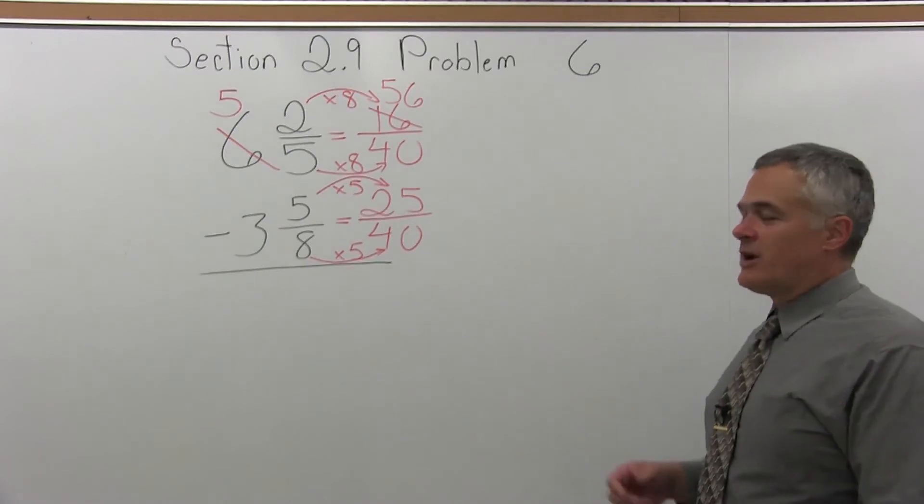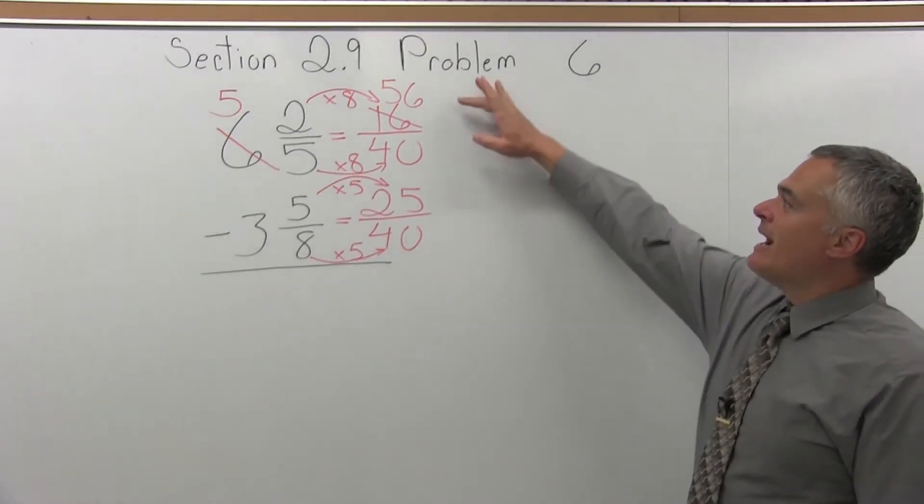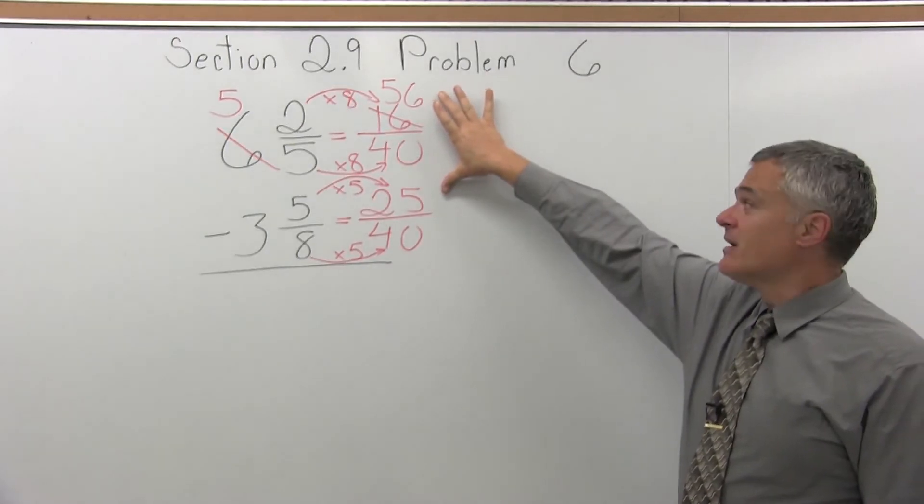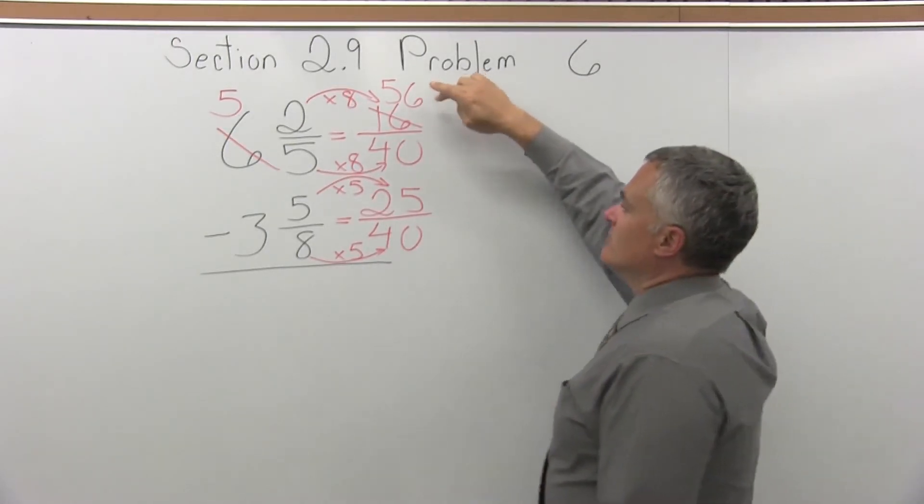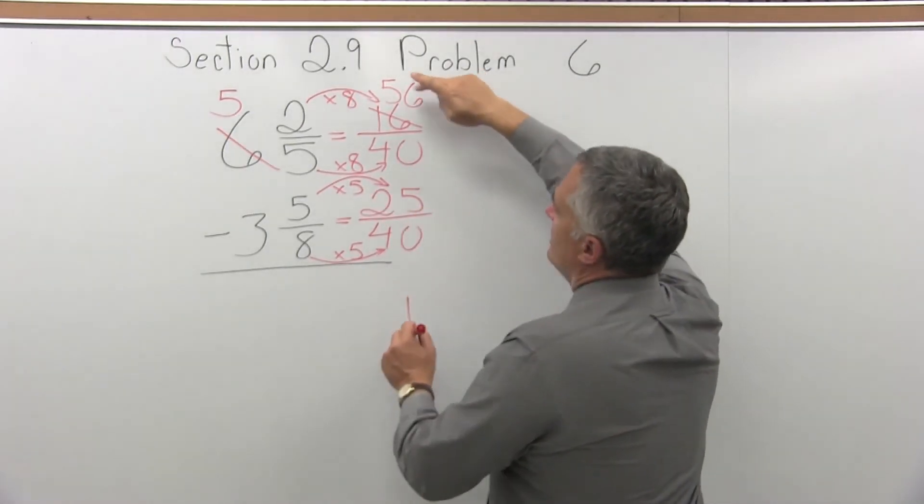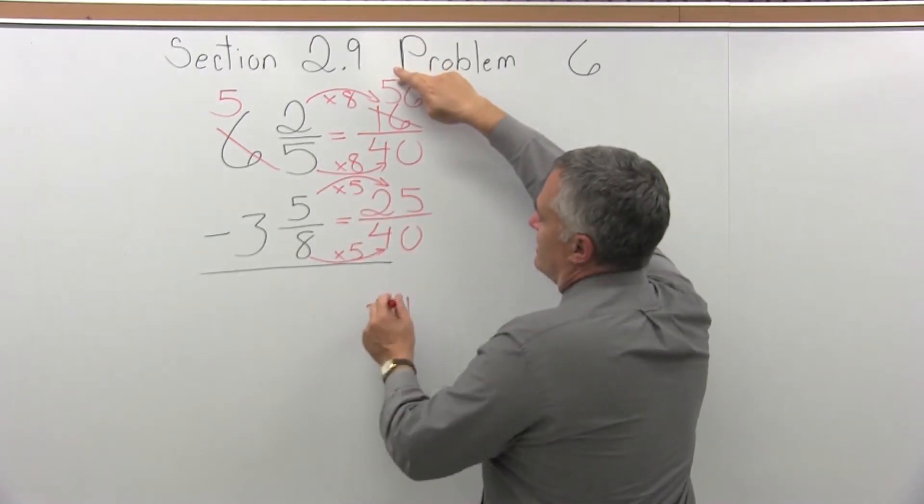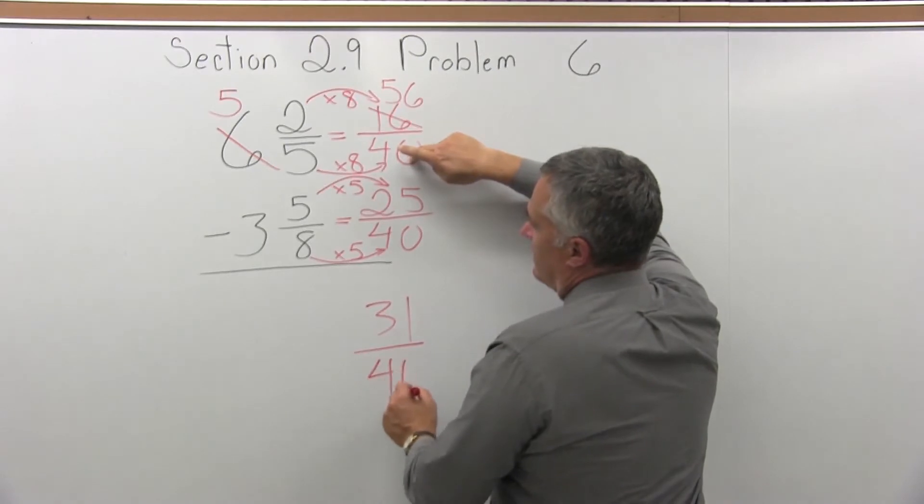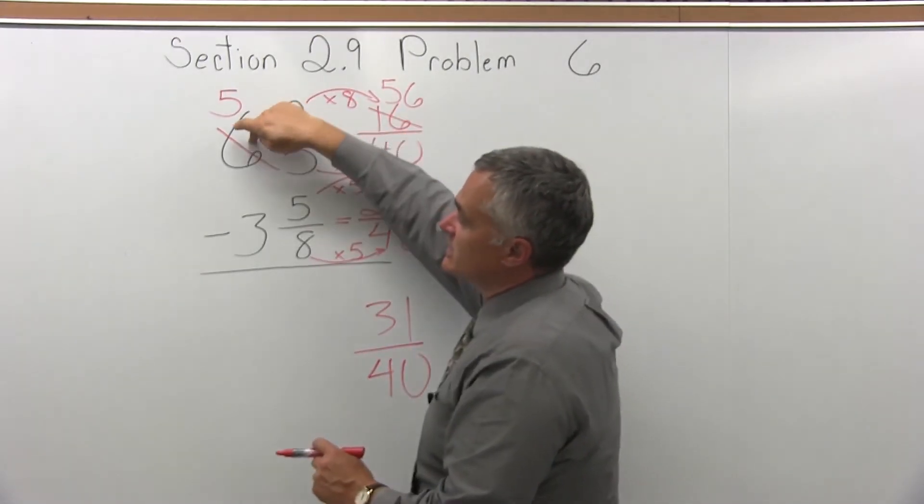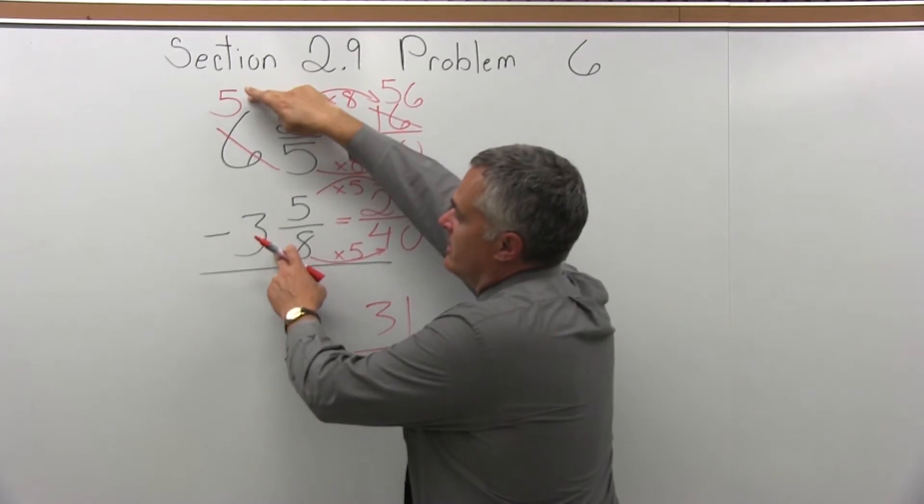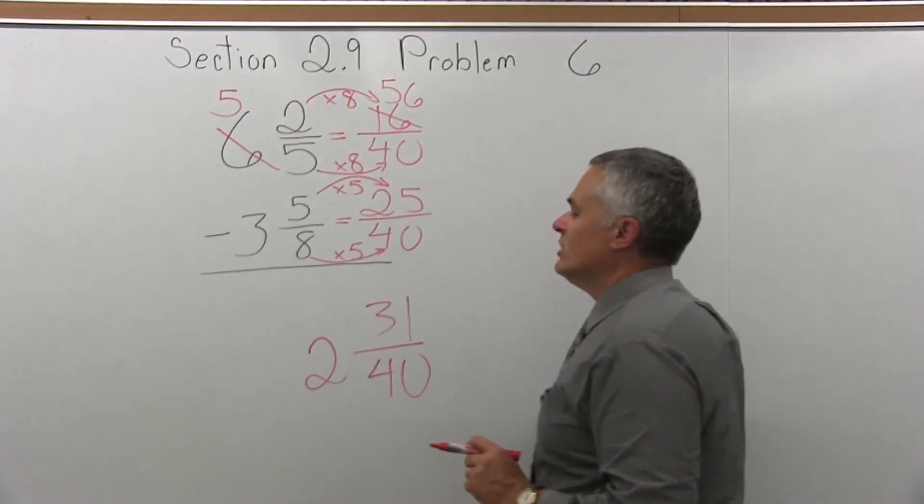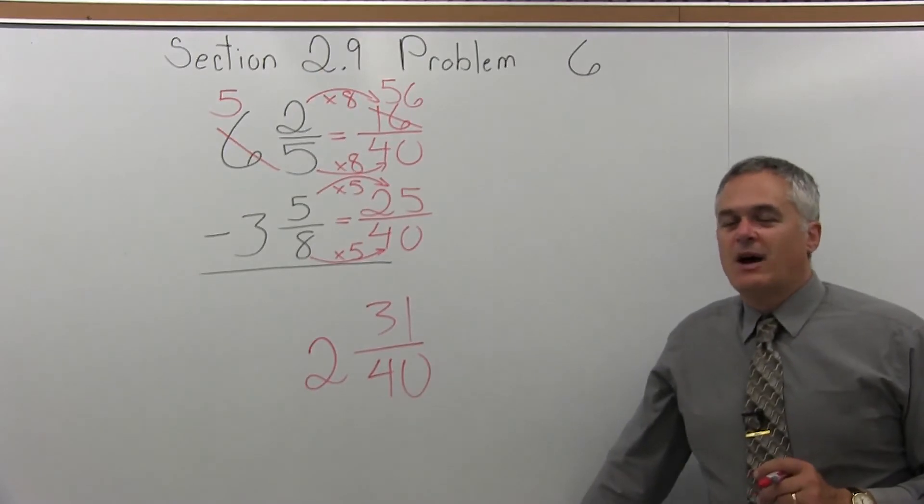That's how you borrow when you subtract mixed numbers. Now I have to subtract 56 minus 25. Now the 56 is big enough. So, 6 minus 5 is 1, 5 minus 2 is 3. I have 31 as the numerator, common denominator is 40. Subtract the whole numbers, don't forget it's not a 6 anymore, we reduced it to a 5 so we can borrow. 5 minus 3 is 2. 2 and 31 fortieths.